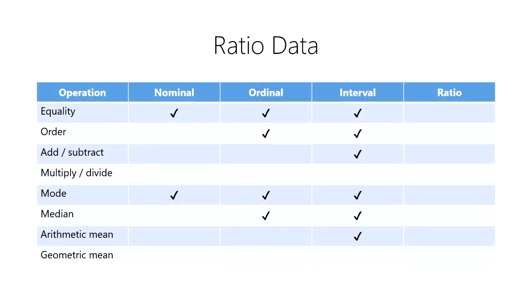We can perform a few more mathematical operations on ratio data than we can on nominal, ordinal, and interval data. In addition to all of the operations we've seen so far, we can also multiply and divide ratio data. In addition, we can determine the geometric mean, which is a method of averaging used for values with widely varying ranges.